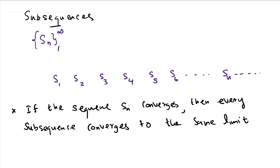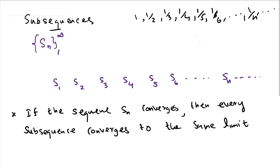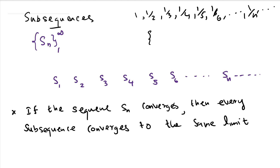Let's do an example. Take the sequence 1, 1/2, 1/3, 1/4, 1/5, 1/6, and so on — 1/n. That's the main sequence. Now if you want to create a subsequence, you can take the terms you like. I'm going to take 1/2, then 1/5, then 1/8, and so on. Here I created a subsequence. All I have used are terms from the main sequence, and this maintains the order — 1/8 came after 1/5, and 1/5 came after 1/2 — which totally maintains the order from the main sequence. So this is a valid subsequence.